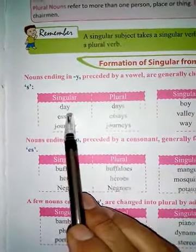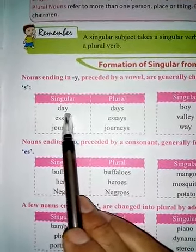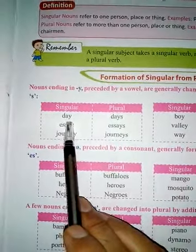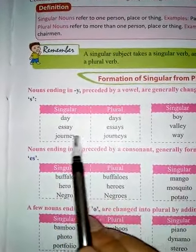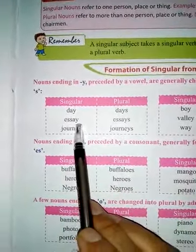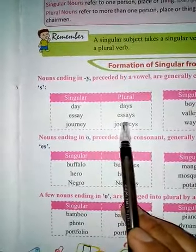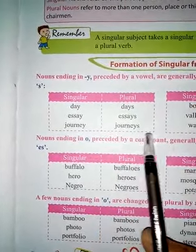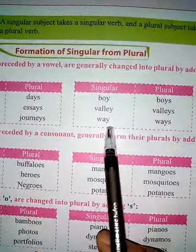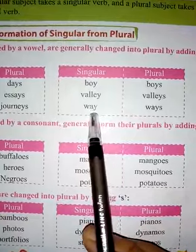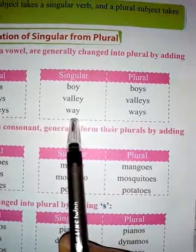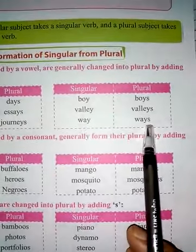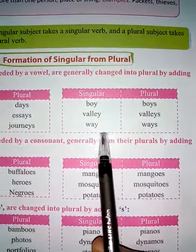Suppose 'day' — D-A-Y. Y is there, and before Y, A is a vowel, so here it will be D-A-Y-S. 'Say' — A is a vowel, so S-A-Y-S. 'Journey' — same, journeys. 'Boy' — boys. 'Valley' — valleys. 'Way' — ways. It ends with Y and before Y, A is a vowel, so naturally W-A-Y-S. Only S will be added to make plural form.